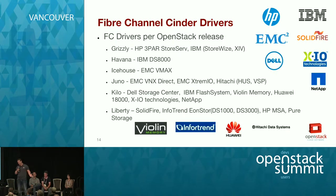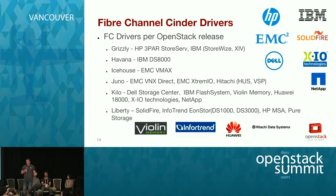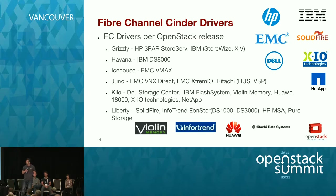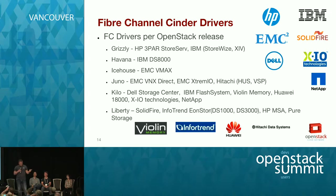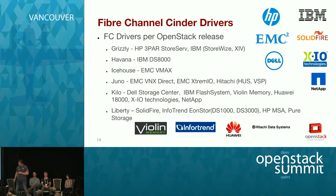When we first started, you had to pre-create your zones, which wasn't very usable in a real cloud environment. In the early time frame — Grizzly, Havana, Ice House — we had HP, IBM, and EMC drivers. Once we hit Juno and had the Zone Manager ironed out, more drivers appeared. We really saw a lot of new drivers and vendors in Kilo. Liberty is already seeing three or four new vendors, and HP is putting another one up. More vendors — it's really starting to take off.